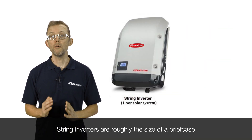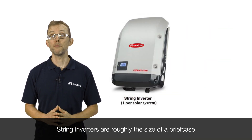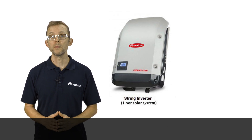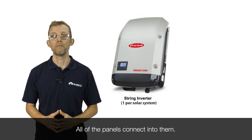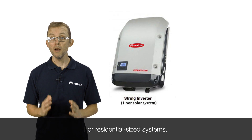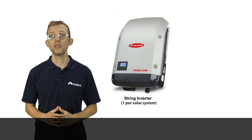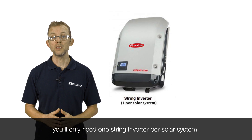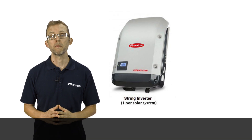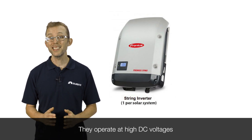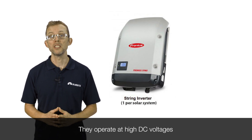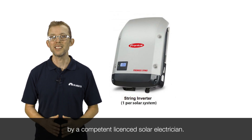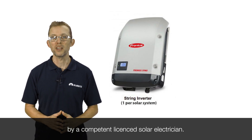String inverters are roughly the size of a briefcase and they are mounted on a wall. All of the panels connect into them. For residential-sized systems, you'll only need one string inverter per solar system. They operate at high DC voltages, but they're perfectly safe when installed by a competent, licensed solar electrician.